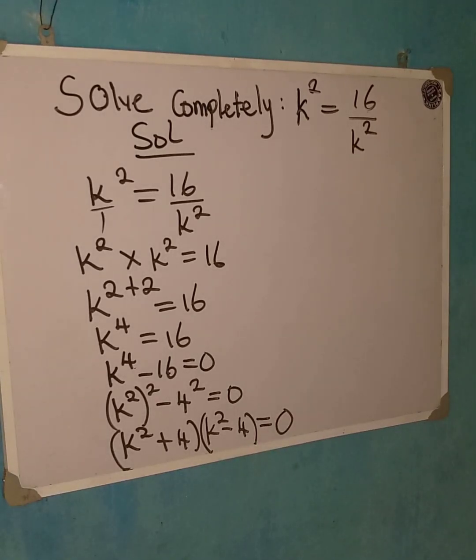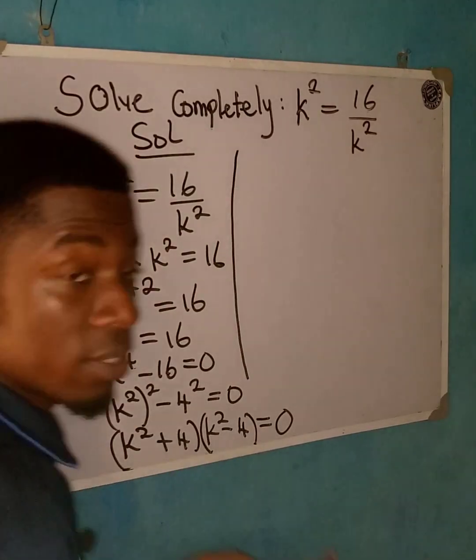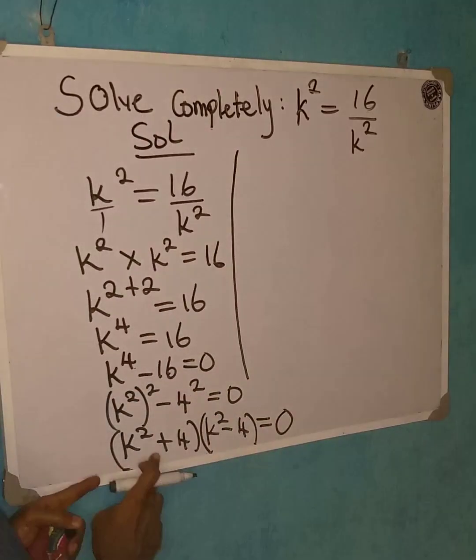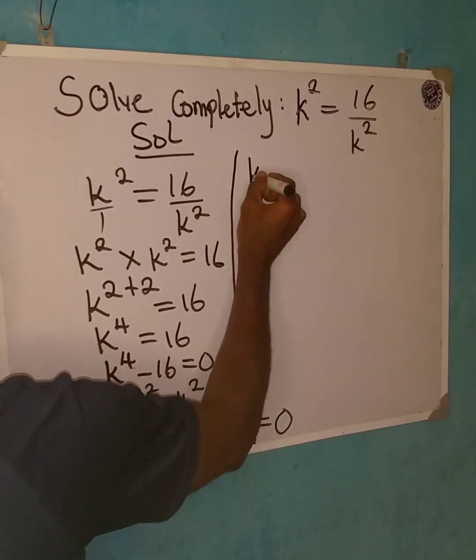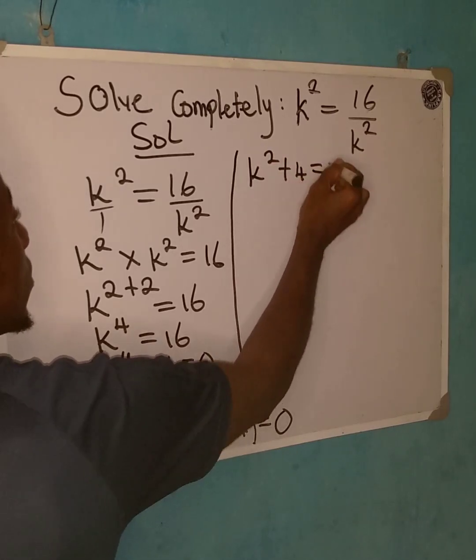Look at that very well. So from here, we can now say that it's either this is equal to 0 or this one here is equal to 0. Let's get started. This is actually very simple. Watch the way I will do it now. So I'm going to pick this first.